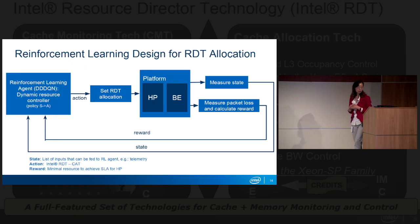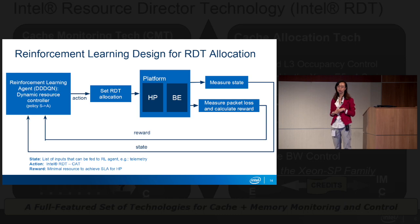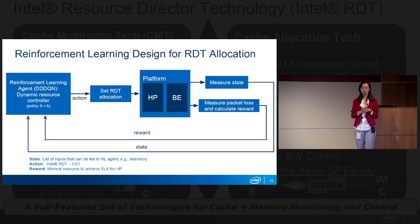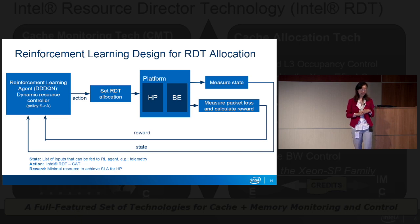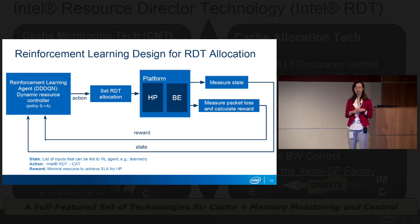This figure shows our detailed closed-loop automation framework for dynamic RDT allocation. As I explained, we tried different algorithms, and for this particular problem, we find the DDDQN algorithm works well. The box on the left is our dynamic resource controller, whose fundamental engine is the reinforcement learning agent. The agent issues the action to the environment — here the action is the RDT last-level cache allocation between the high-priority VNF and the best-effort workloads.